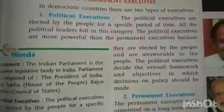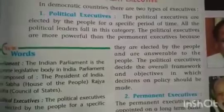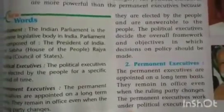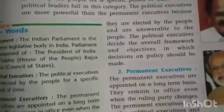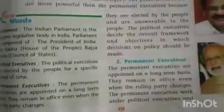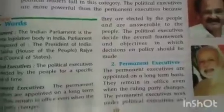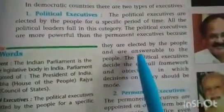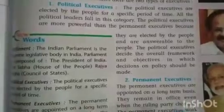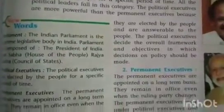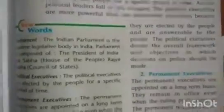Permanent executives are appointed on a long-term basis and remain in office even when the ruling party changes — for example, the President. Political executives are more powerful than permanent executives. In a political executive, members are directly elected by the people, whereas permanent executives are not directly elected — they are indirectly elected by the Electoral College. What Electoral College means we will come to know in the next topic.